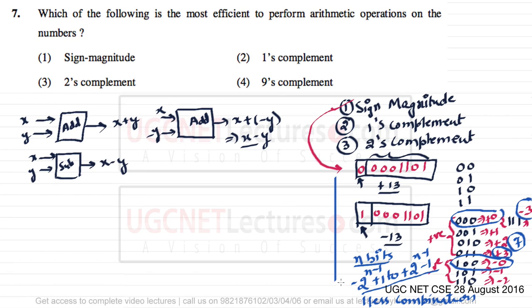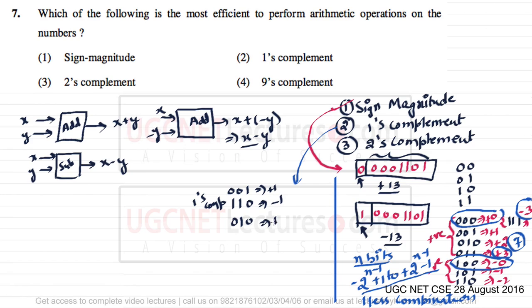To address this, we introduced one's complement representation. In one's complement, to represent the negative counterpart of any number, we take the one's complement of that number. For example, 001 represents +1; its one's complement is 110, representing -1. Similarly, 010 is +2 and its one's complement 101 is -2. And 011 is +3 whose one's complement 100 is -3.